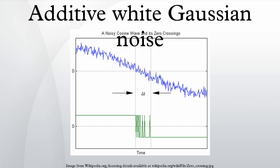Wideband noise comes from many natural sources, such as the thermal vibrations of atoms in conductors, shot noise, black body radiation from the earth and other warm objects, and from celestial sources such as the sun.